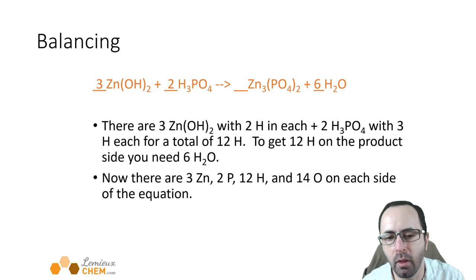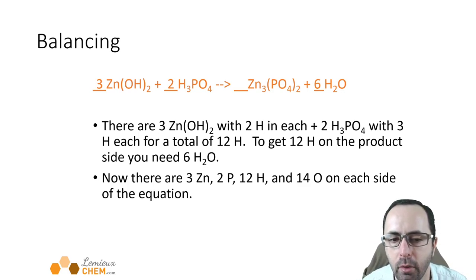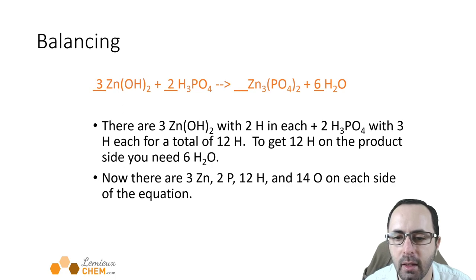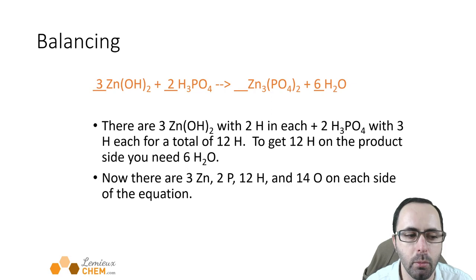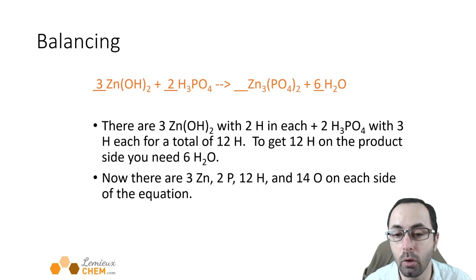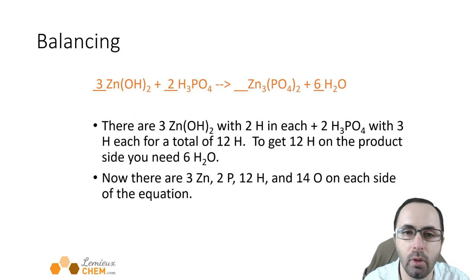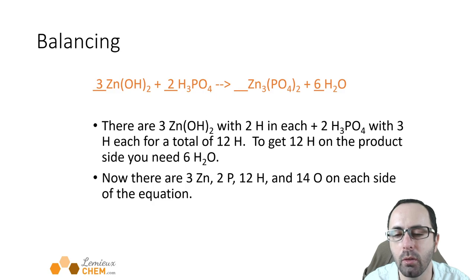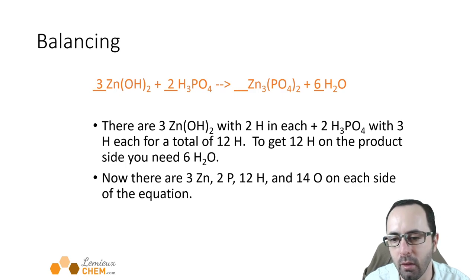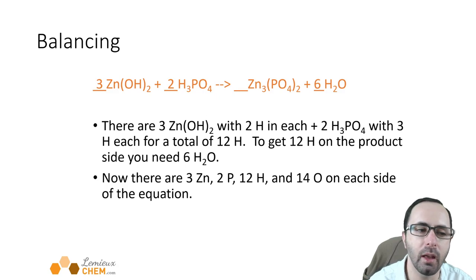Those are the three tips for balancing chemical equations. There are more problems in the homework, so go ahead and give those a shot. Balancing chemical equations will be really important as we move forward. In your textbook chapter 4.1 there are even more examples with answers — if you've done the homework and still feel like you need practice, work through those example problems until you're feeling confident you're getting the right answers. That's it for balancing equations and I will see you in the next lecture.